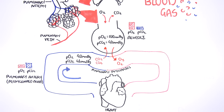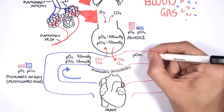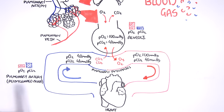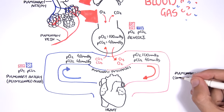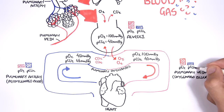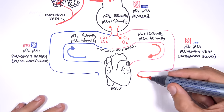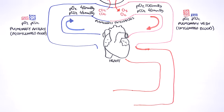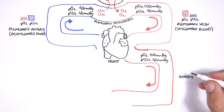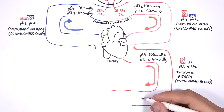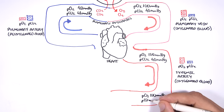The new partial pressure in the reoxygenated blood is oxygen of about 100 mmHg and carbon dioxide of about 40 mmHg, so there is a higher partial pressure of oxygen than carbon dioxide. This blood vessel is the pulmonary vein and carries this oxygenated blood back to the heart. The heart then pumps this oxygenated blood to the tissues through the systemic arteries — the partial pressure of oxygen is 100 mmHg and carbon dioxide is about 40 mmHg.